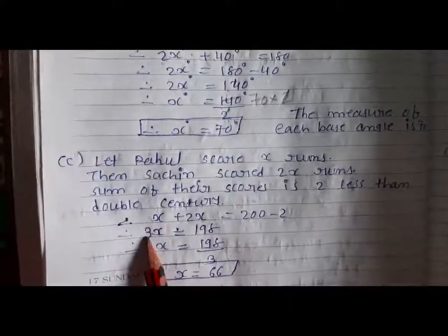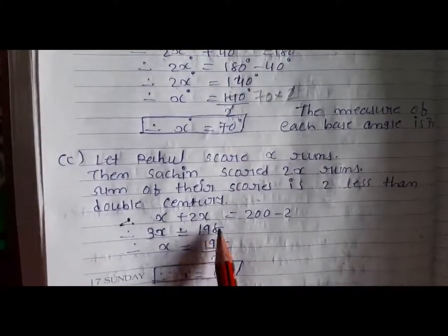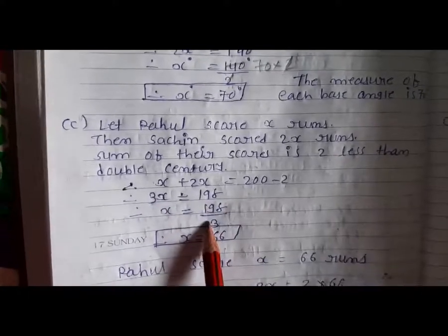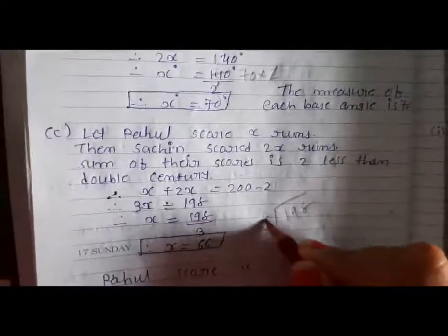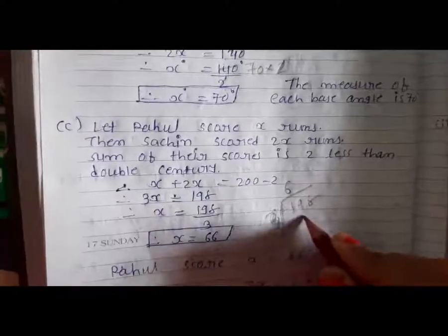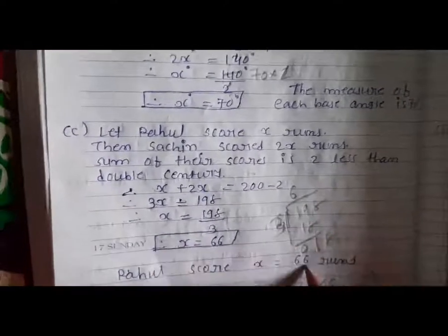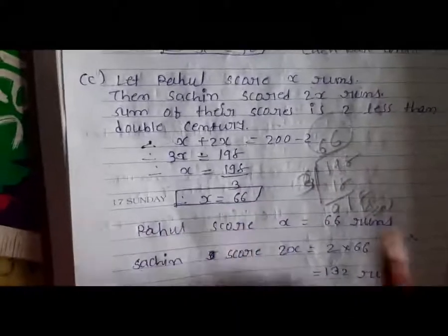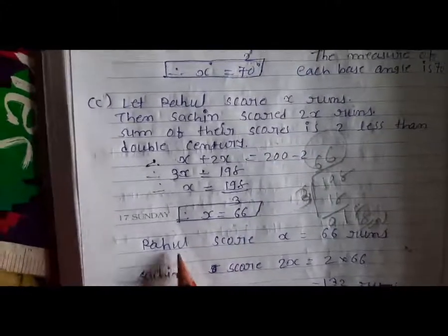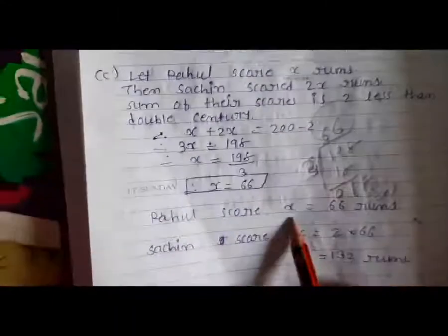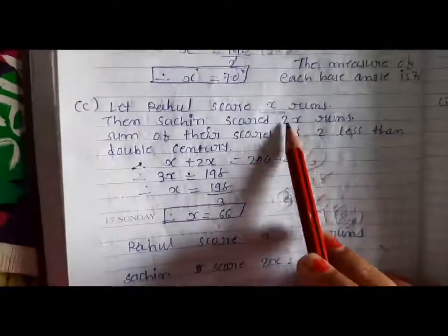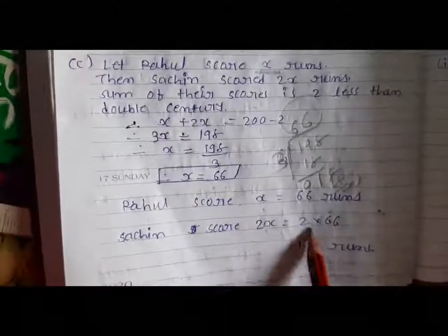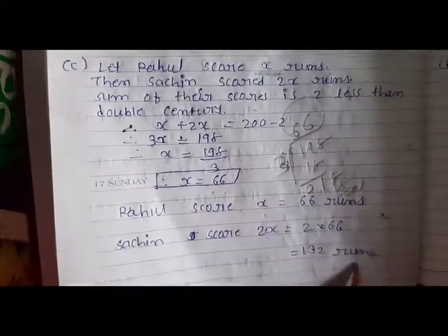1X plus 2X totals 3X, which equals 198. Dividing both sides by 3: X equals 198 divided by 3, which is 66. So Rahul's score is X equals 66 runs. Sachin's score is 2X equals 2 multiplied by 66, which is 132 runs.